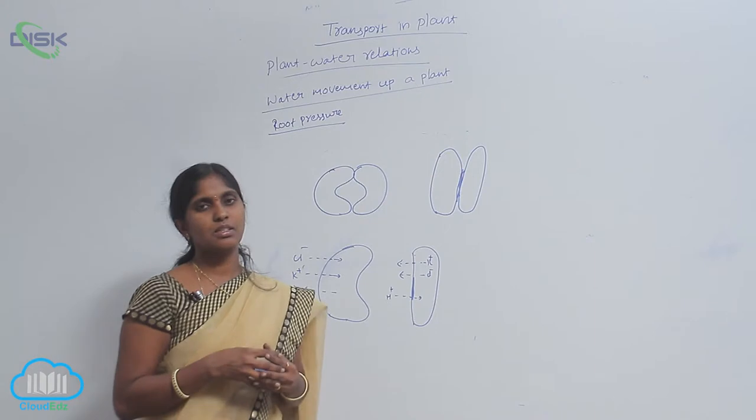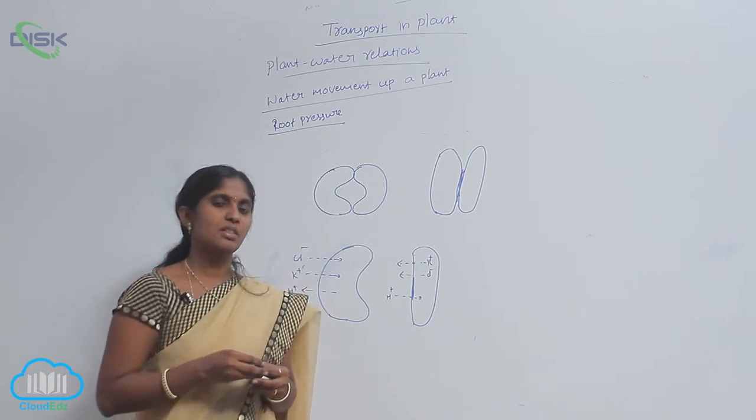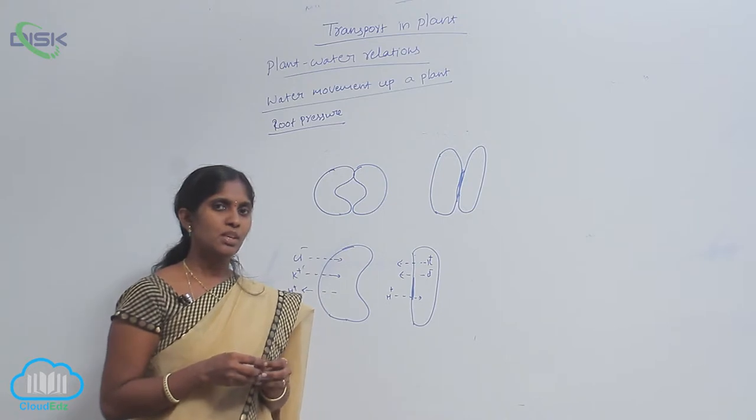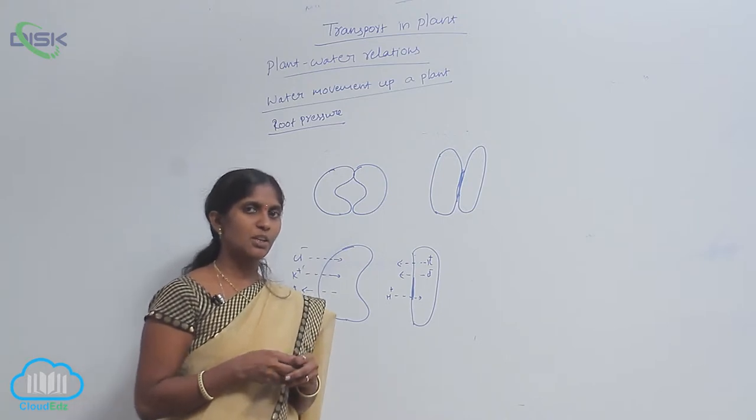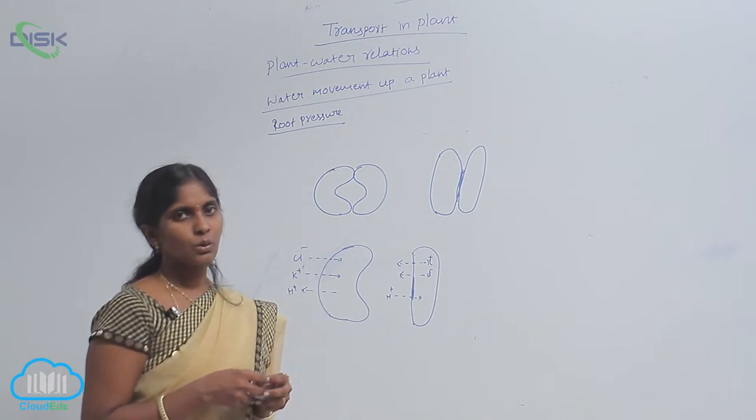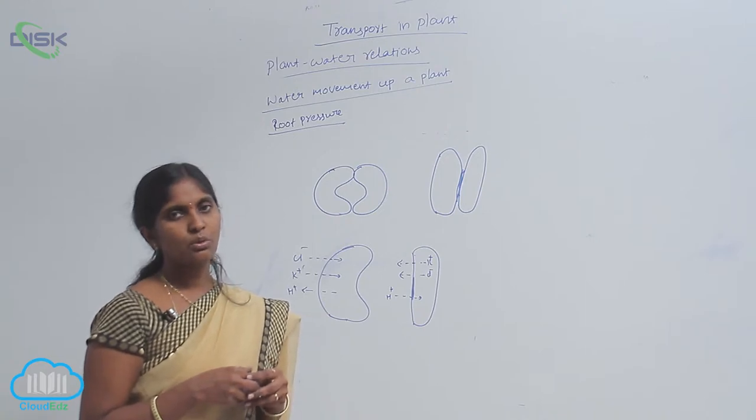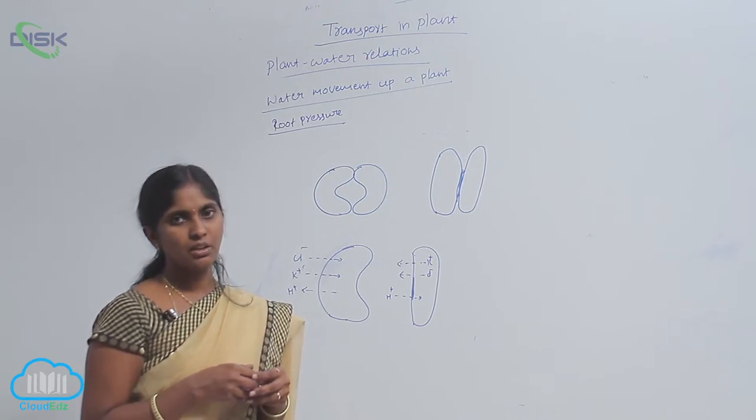The transpiration is carried at stomata. The stomata has two cells. The two cells are kidney-shaped cells. They are called as guard cells. Between the guard cells, the stomata pore is there, through that pore the gaseous exchange is carried out.